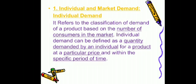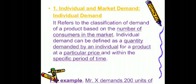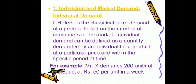Individual demand means when any individual demands a product at a particular price and within a particular specific time. Here we can take an example: if there is a Mr. X who, in one week, demands 200 units at the rate of 50 rupees per unit — this is called an individual demand.